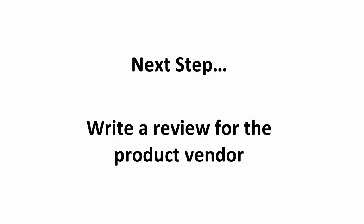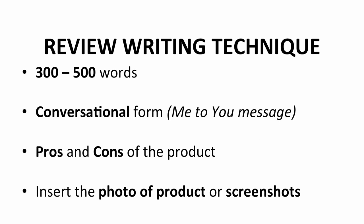Now that you know how to get access to a review product from the product vendor, the next step is writing a review article for the product. Review writing is essential in affiliate marketing. A good review article can increase the conversion rate and hence increase the purchasing rate through your affiliate link. Keep the article within 300 to 500 words — anything more will exceed the attention span of your readers. Write it in conversational form, a me-to-you message. You don't have to be formal; make it more personal and friendly. There are only two important points to cover: the pros and cons of the product.